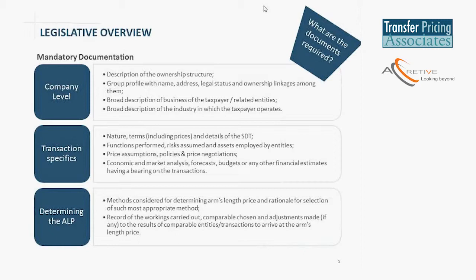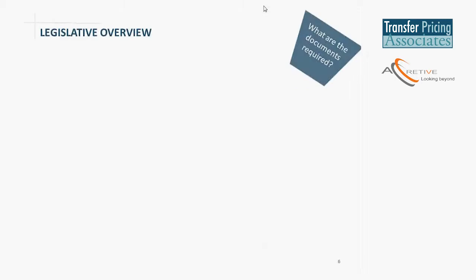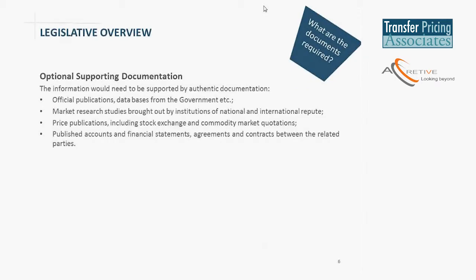The actual arm's length price must be determined having regard to one of the six methods, and the selection of the most appropriate method needs to be documented. The recording of the workings carried out in terms of the comparability analysis and the adjustments to the results of those comparable transactions will also have to be documented. It's a fairly robust requirement of documentation in line with international standards. Alongside this, the law provides for supporting documentation which is optional, but if it further substantiates the price assumptions or pricing model, it would be recommended to include it as part of the taxpayer documentation.